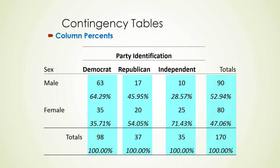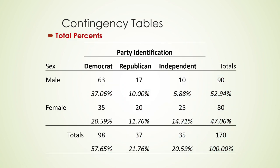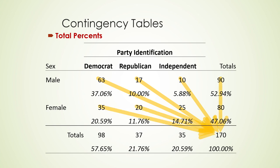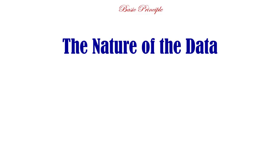This is a key thing we constantly have to ask ourselves when working with numbers: when someone says percent, you always have to wonder — percent of what? Total percents: take every number and divide by total n. This is actually not very useful most of the time. Usually we go for row or column percents depending on what question we want to answer. And with that, we're done.